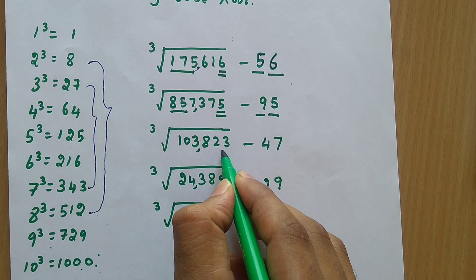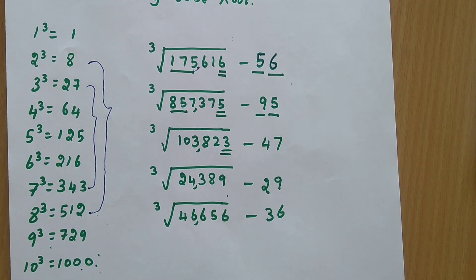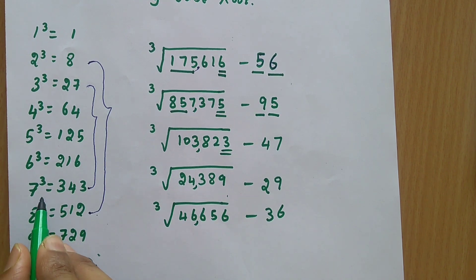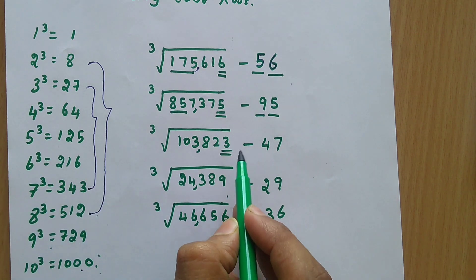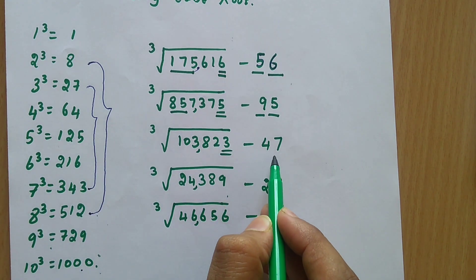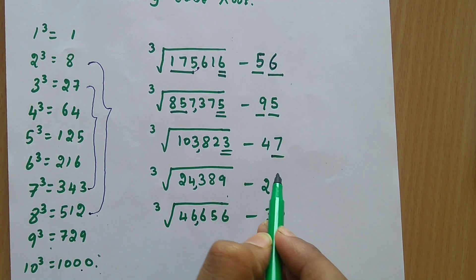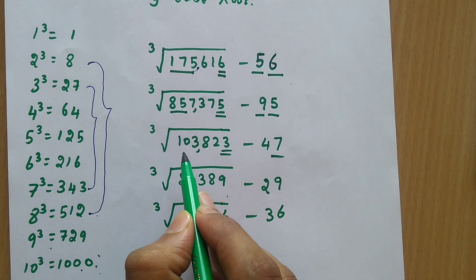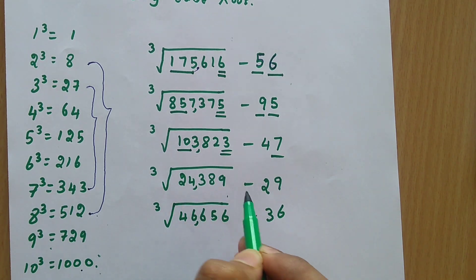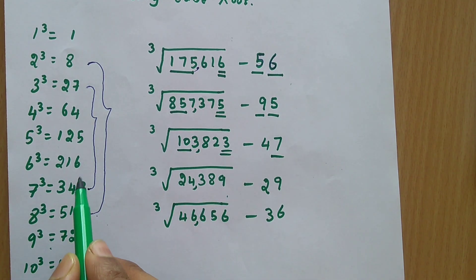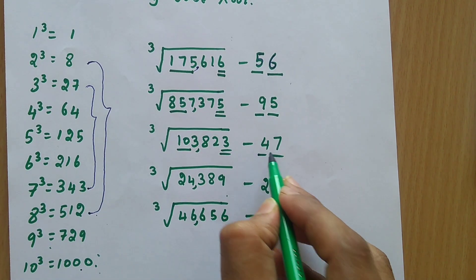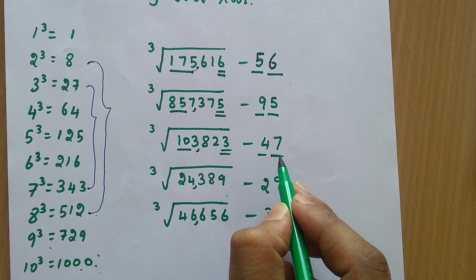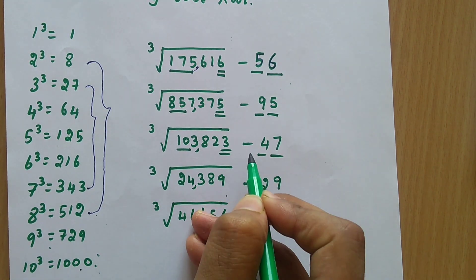Here the last digit is 3. So if the last digit is 3, you have to change the number to 7 — so the unit digit is 7. Similarly, if the last digit is 7, you change it to 3. To find the tens digit, you look at the perfect cube below 103. The perfect cube below 103 is 64, and the corresponding cube root is 4. So the number is 4, making 47 the answer for the cube root of 103823.